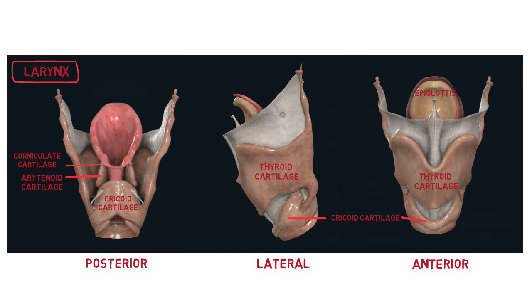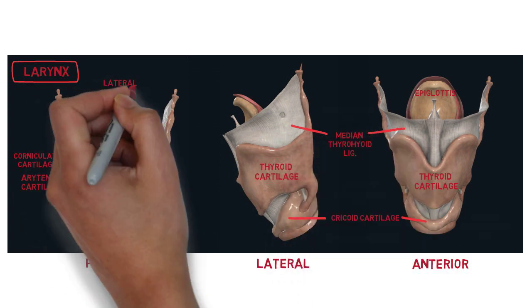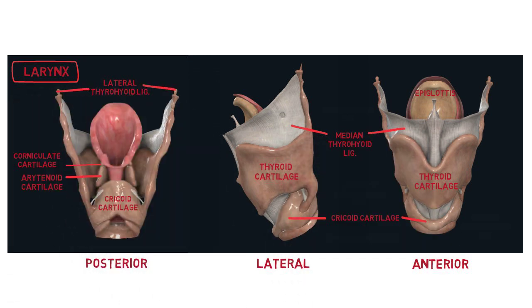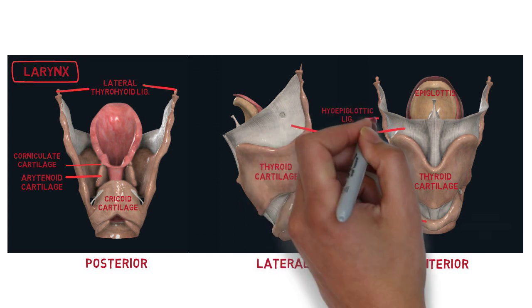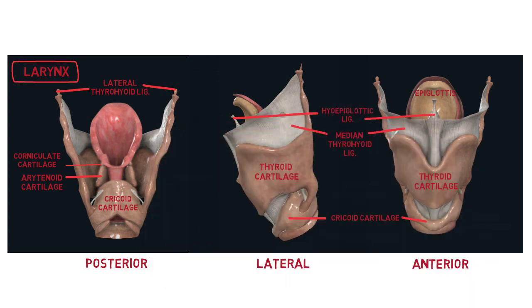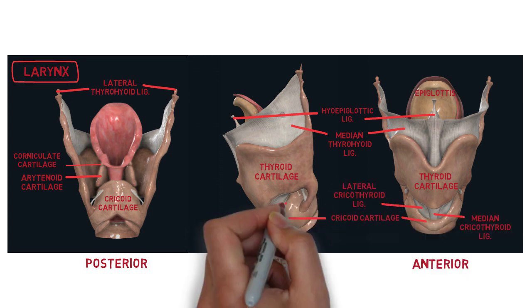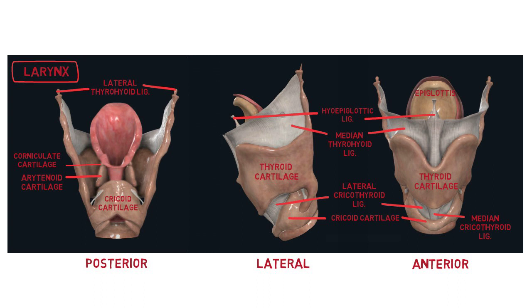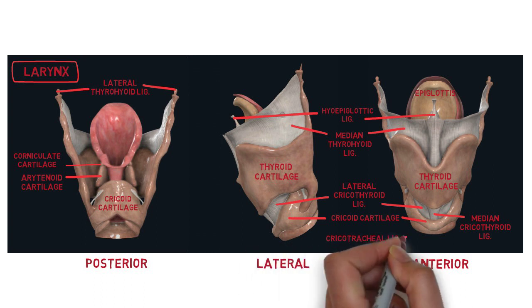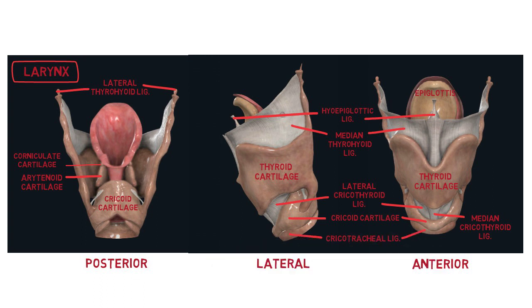The ligaments here are the median and lateral thyrohyoid ligament, which is between the thyroid cartilage and the hyoid bone. Between the hyoid bone and epiglottis, there is the hyoepiglottic ligament. Between the thyroid and cricoid, there are median and lateral cricothyroid ligaments. And lastly, between the trachea and the cricoid, there is the cricotracheal ligament.